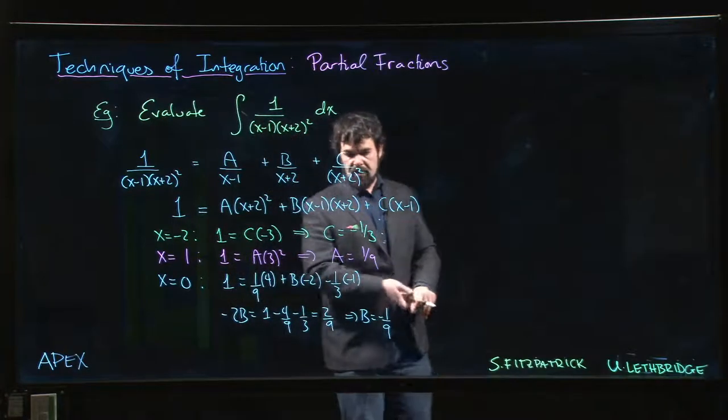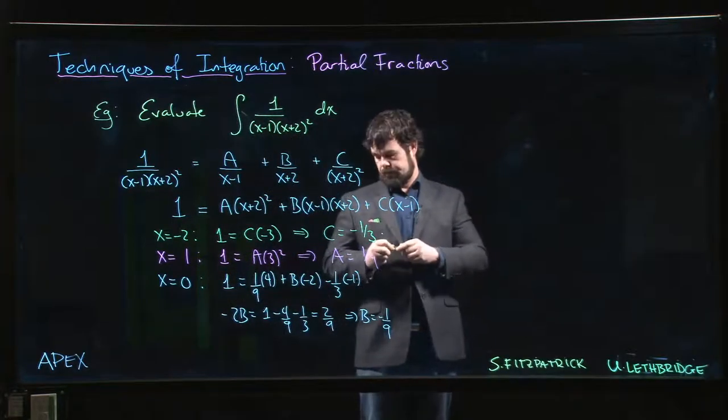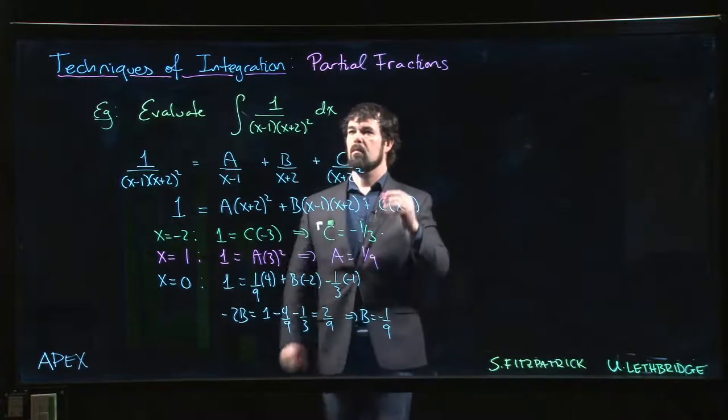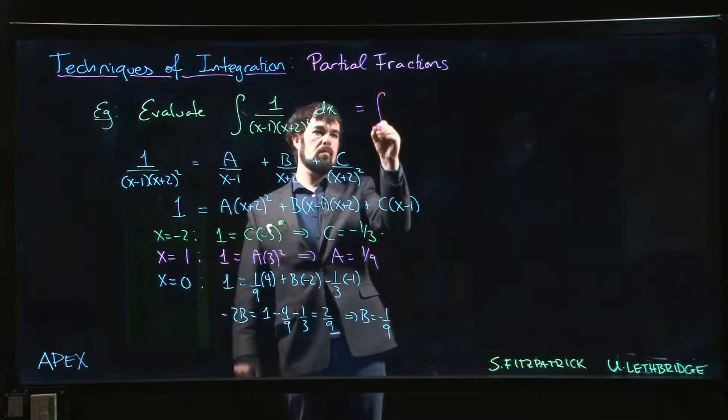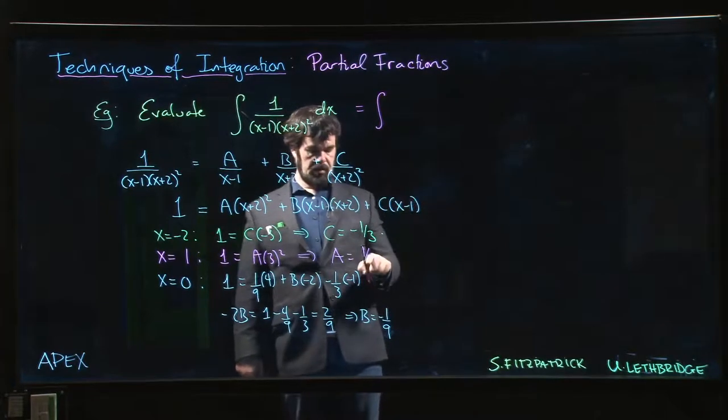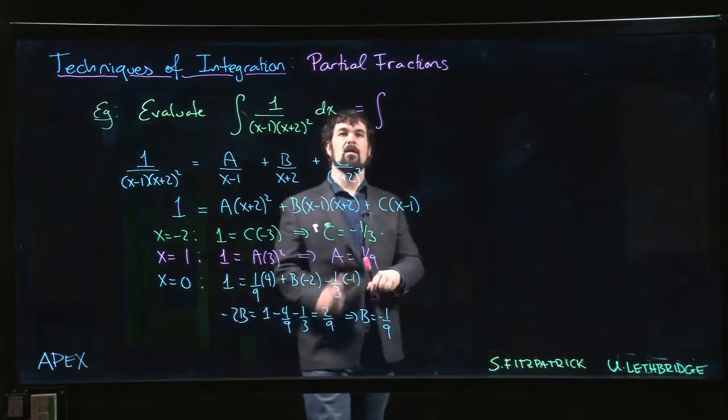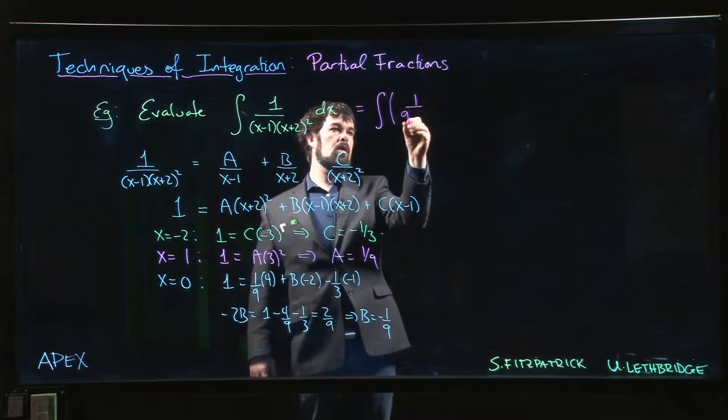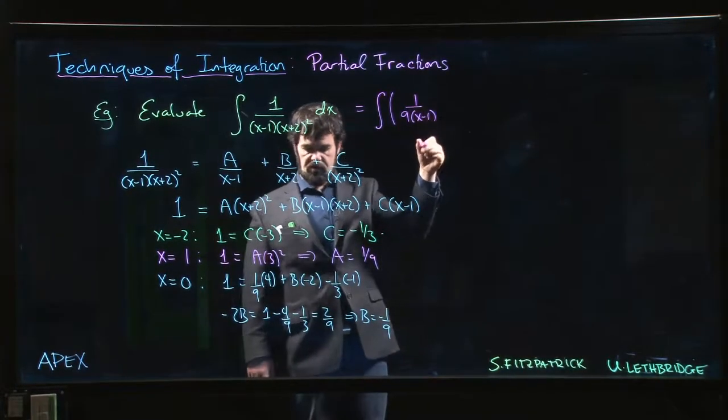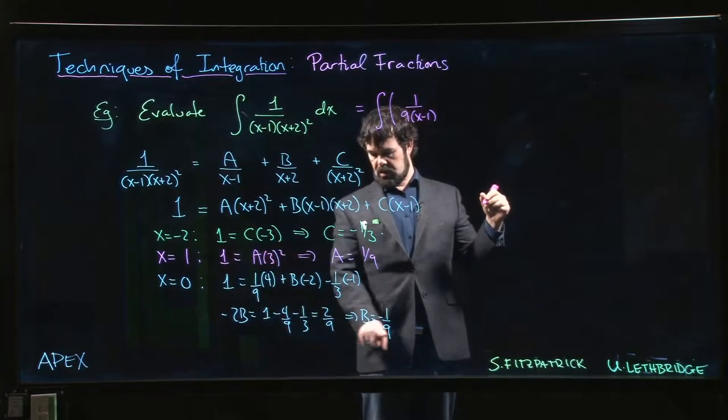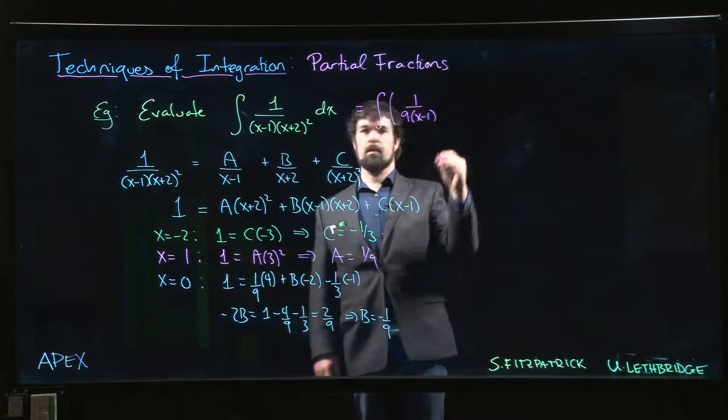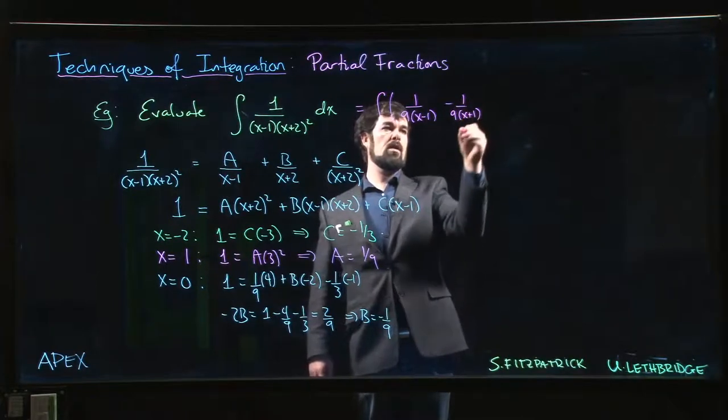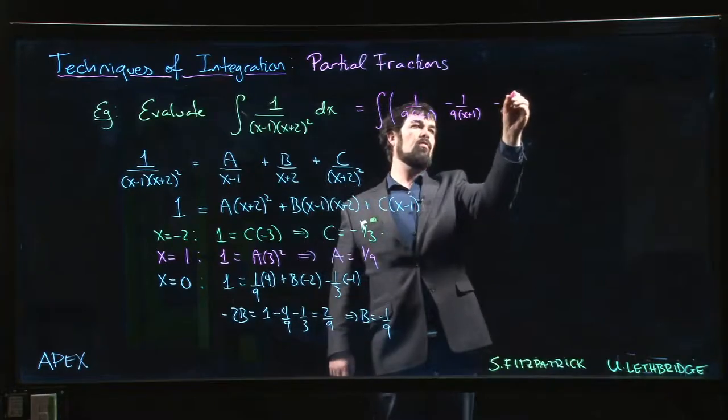All right, so having found those coefficients, we can come back up to here and we put them in. So A is 1 over 9, so we have 1 over 9 times (x minus 1). B is minus 1 over 9 times (x plus 2), and C is minus 1 over 3 times (x plus 2) squared.